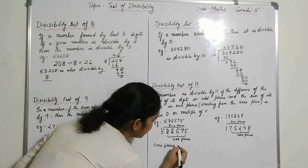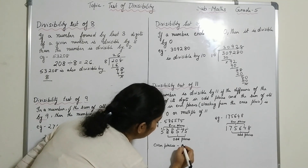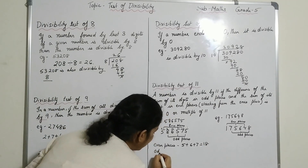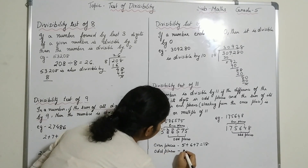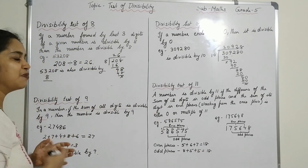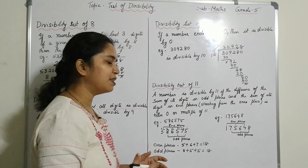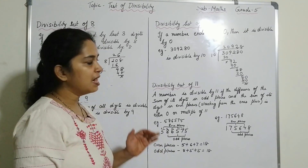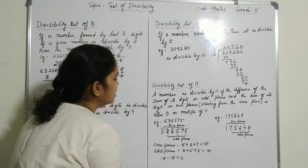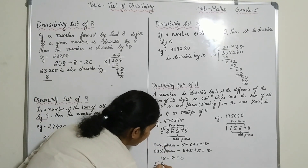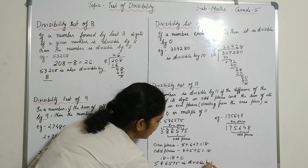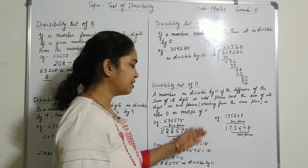For the number 586575: sum of digits in even places is 5 + 6 + 7 = 18, and sum of digits in odd places is 8 + 5 + 5 = 18. We find the difference between the even and odd place sums. If the difference is 0, or 11, or a multiple of 11, then the number is divisible by 11. Here, 18 − 18 = 0, so the number 586575 is divisible by 11.